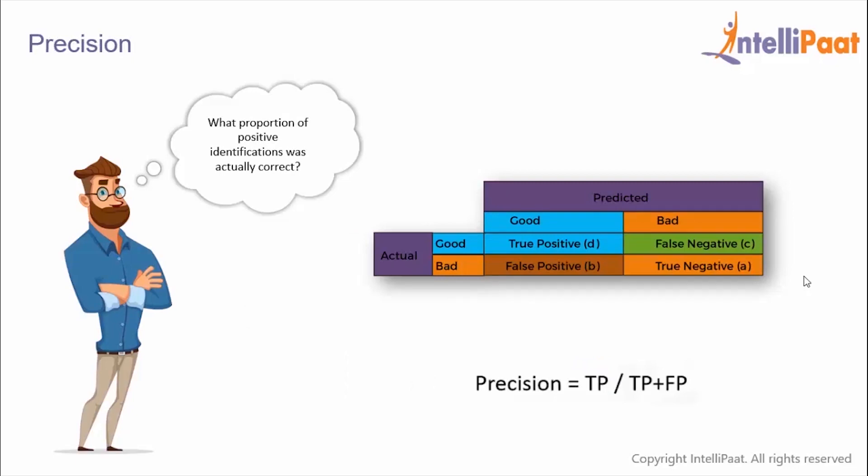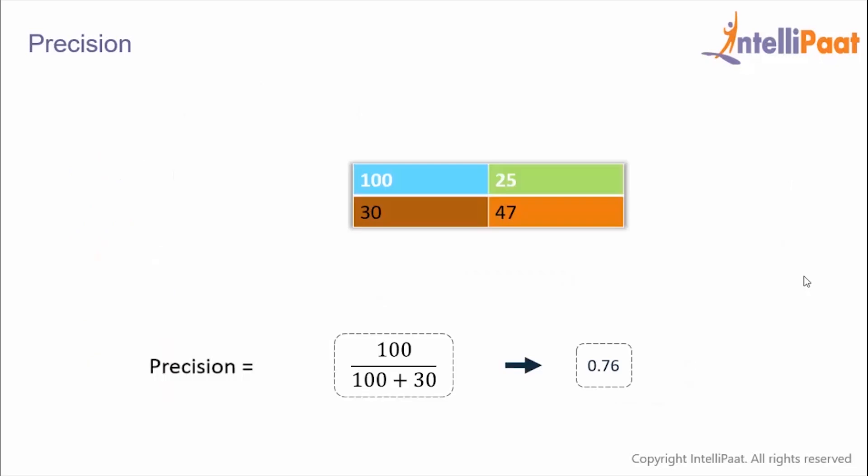The next performance metric is precision. This gives us the proportion of positive identifications which were actually correct. We calculate precision by dividing true positives by the sum of true positives and false positives. With 100 true positives and 30 false positives, we divide 100 by 130, giving a precision value of 0.76.